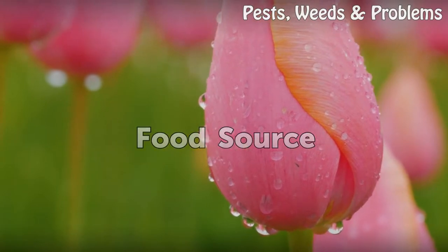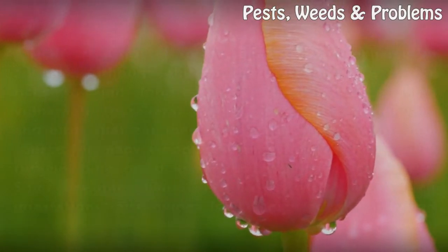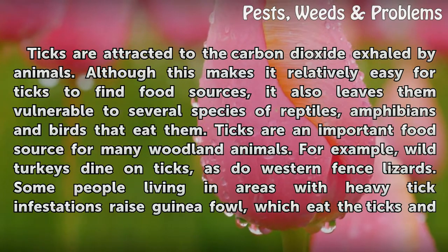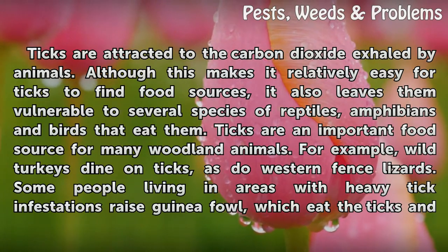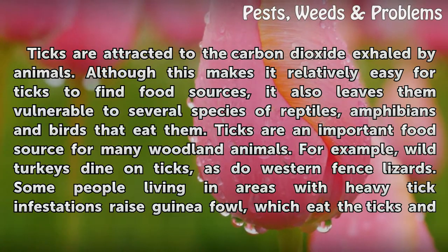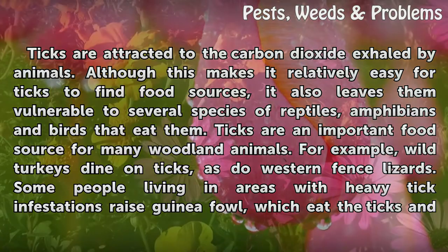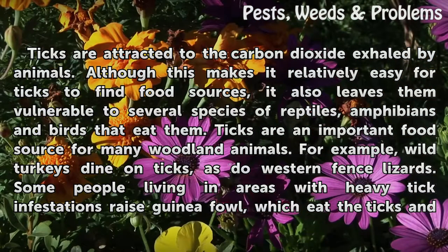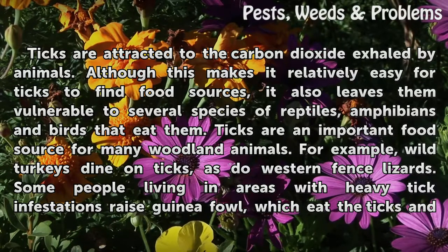Food Source. Ticks are attracted to the carbon dioxide exhaled by animals. Although this makes it relatively easy for ticks to find food sources, it also leaves them vulnerable to several species of reptiles, amphibians, and birds that eat them. Ticks are an important food source for many woodland animals.